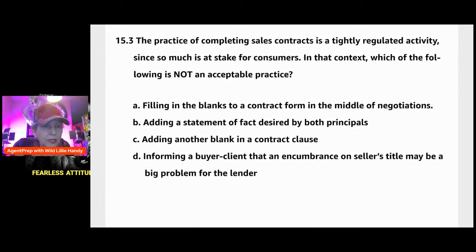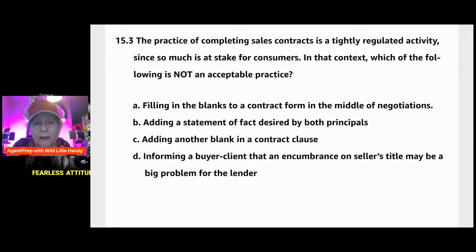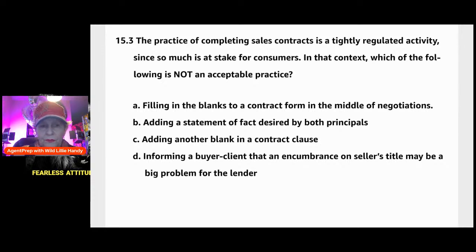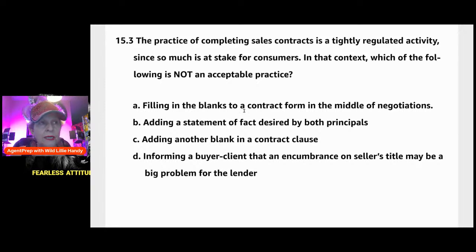A is acceptable — filling in blanks is what we do. D is acceptable — informing a buyer about an encumbrance, a cloud on the seller's title, is something we can do. An encumbrance such as another lien, an encroachment, a boundary line issue, or an unrecorded easement may cause a problem for the lender. The answer is C — adding another blank in a contract clause is not acceptable. We're then modifying the clause, which we cannot do.